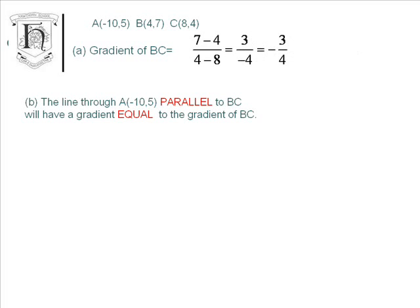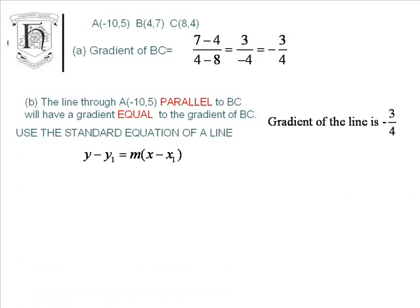The line through point A, parallel to BC, will have a gradient which is equal to the gradient of BC, so it will have a gradient of minus 3 quarters. We are going to use the standard equation of a line, Y minus Y₁ equals M(X minus X₁), to find the equation of the line that we are after.